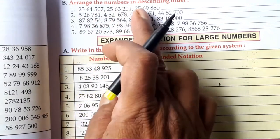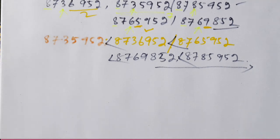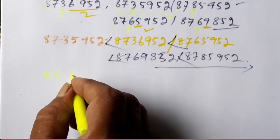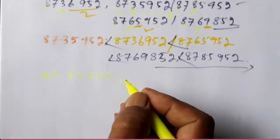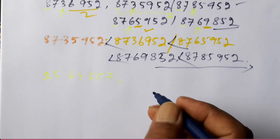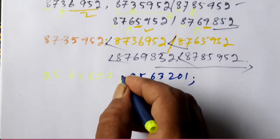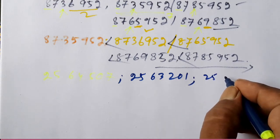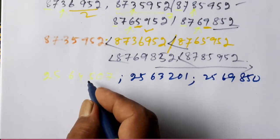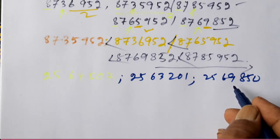The question says: arrange the numbers in descending order. The first number is 2564507, the second is 2563201, and the third is 2569850. First, we count the digits — all three numbers have 7 digits each. So we compare digit by digit. The first two digits 2 and 5 are the same in all. The third digit is 6 in all.